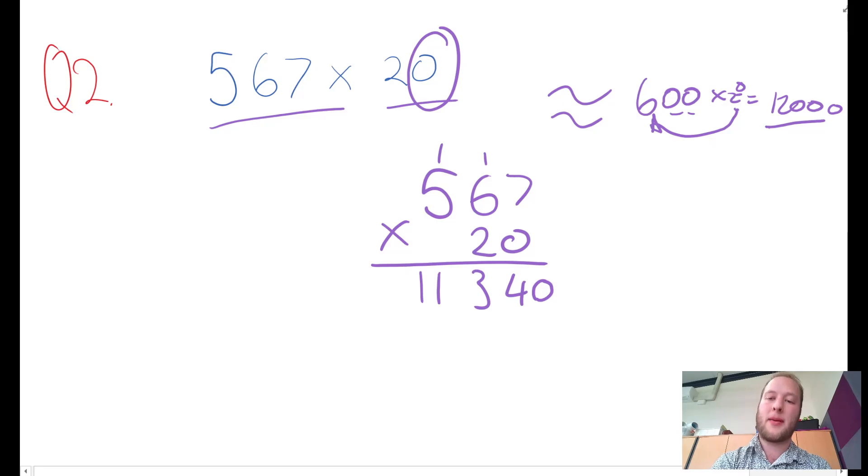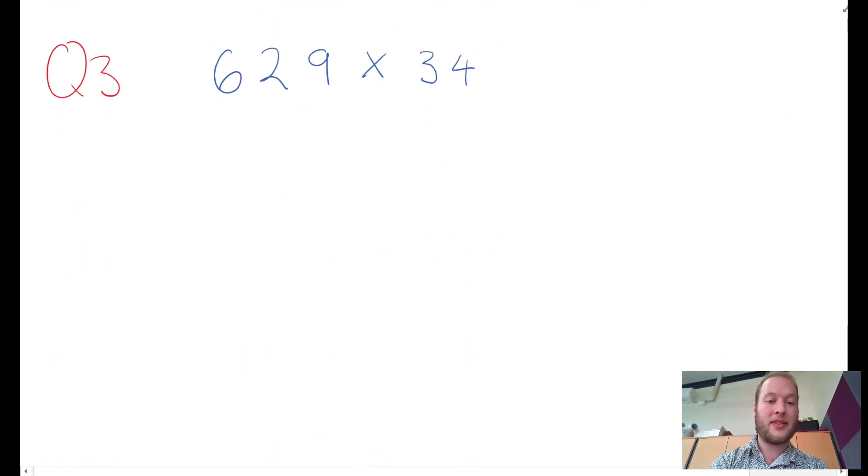I forgot there's a zero here—I needed one more zero: 12,000. That makes more sense.